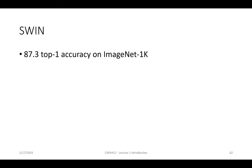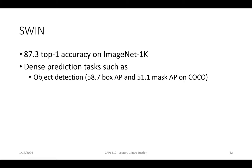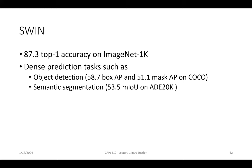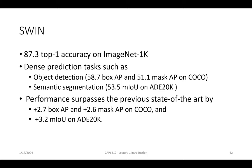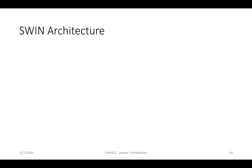The Swin Transformer got very good results — not only on image classification but also on object detection and semantic segmentation, surpassing previous state-of-the-art results on COCO and ADE20K datasets, whereas ViT only demonstrated results on image classification.